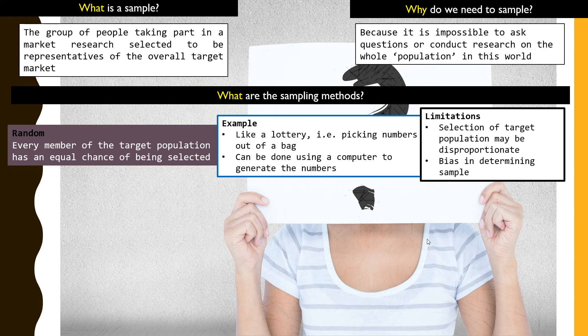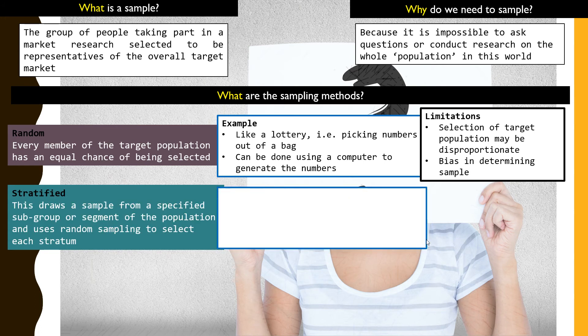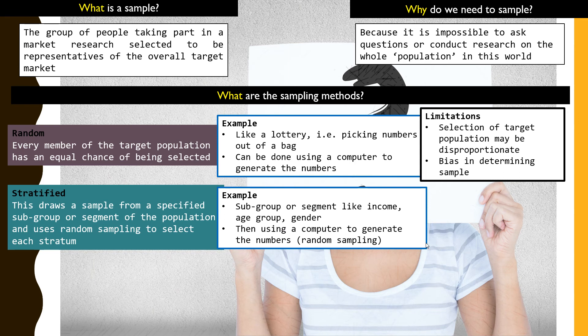To overcome that, there is another method called stratified research. In stratified research, it draws from a specific subgroup or segment of the market, and then we use random sampling to select each stratum. The business has an idea of a group or the whole list of people in the market to a certain point, and they're able to break down the list into various segments such as income group, age, gender, and so forth. Then they will use the computer to generate the numbers by random sampling, deciding on the group they want to focus on.